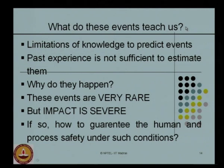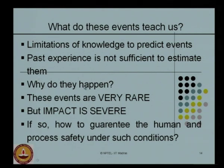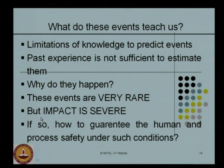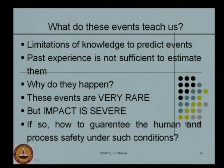What do these events teach us? They very clearly tell us there exist limitations of knowledge to predict such events. The past experience we have is not sufficient to estimate them. Then the question asked is: why do these events happen? These events are very rare, but the impact created by these events is severe. If so, then how can one guarantee human and process safety under such conditions? A very interesting question which leads to an initiative to follow a course called HSE.